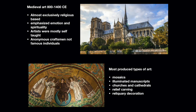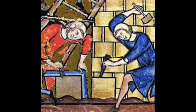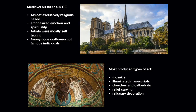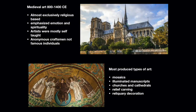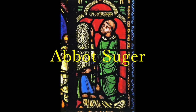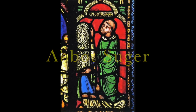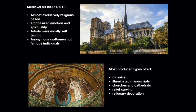In medieval art it was mostly religious. As you can see, that's Notre Dame. They emphasized emotion and spirituality. Artists were mostly self-taught through a training process of apprenticeship. There were anonymous craftsmen — you didn't have names like Michelangelo, Caravaggio, or Picasso. We really don't know who all the artists were. We have a few names, like the architect of some cathedrals in Paris, Abbot Suger, but for the most part we don't know who designed, sculpted, or crafted things.